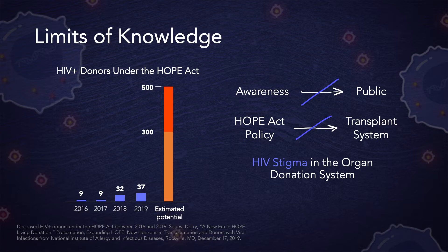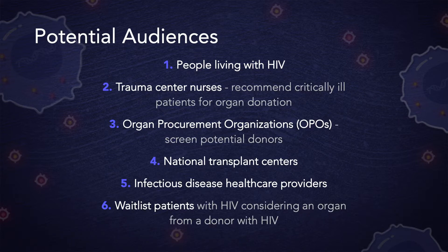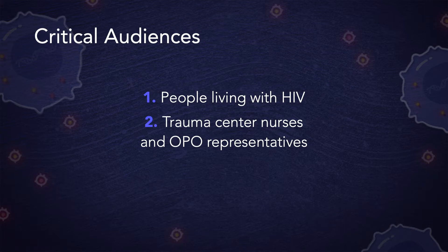This is because there is insufficient visual outreach material to educate a variety of audiences: people living with HIV, trauma center nurses that recommend patients for organ donation, organ procurement organizations that screen potential donors, national transplant centers, infectious disease physicians, and patients with HIV on the waitlist who are considering receiving an organ from a donor with HIV. The most essential audiences were identified. The largest losses of potential donors is from people living with HIV not being aware that they can become organ donors, and that nurses and OPO representatives may not be referring patients with HIV for donation because of a preconceived stigma against HIV.